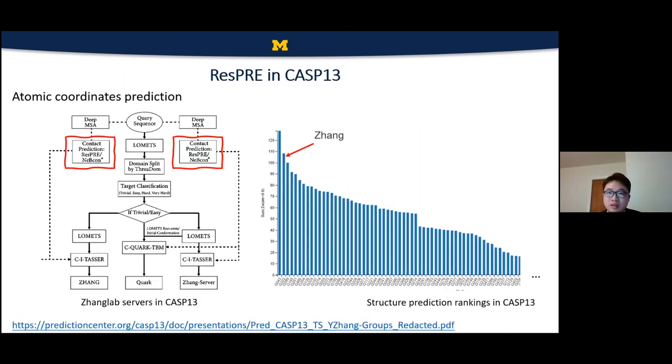So this is the pipeline of Zhang Lab servers in CASP13. And ResPRE provides some contact information for protein structure prediction or simulation programs like QUARK or C-QUARK in CASP13 as shown in the left figure. And the right figure shows the ranking of the prediction structure, of protein structure prediction track in CASP13. So where the first, of course, is AlphaFold. And the Zhang group that used ResPRE also had a quite good ranking in this competition.